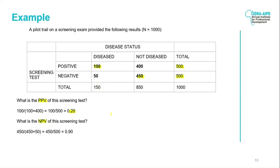The NPV is 90%, meaning the probability that the patient really does not have the disease among those with a negative screening test result is 90% — quite high. If the PPV is 20%, it means that the remaining 80% will be false positives.